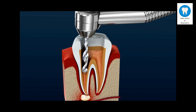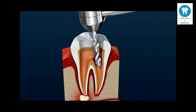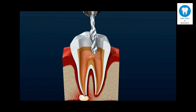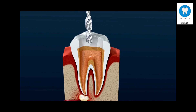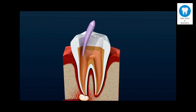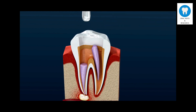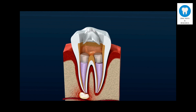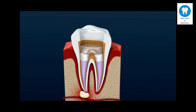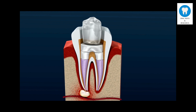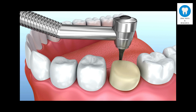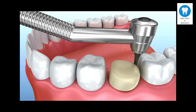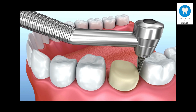Then gutta percha, which acts like an artificial pulp and is a permanent filling in root canals, is placed. On top of gutta percha, a regular restoration like amalgam, composite, or GIC is placed.